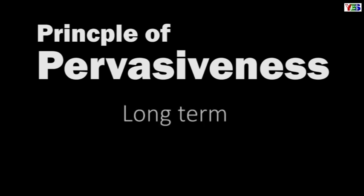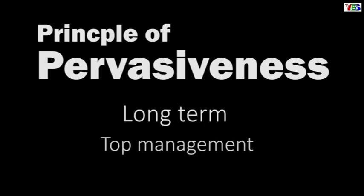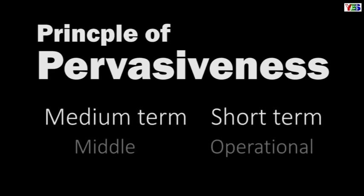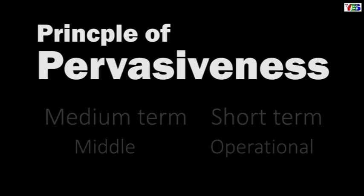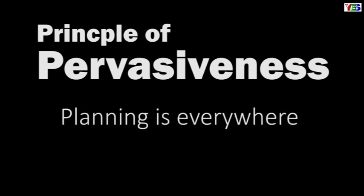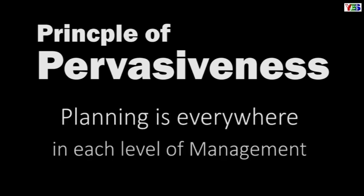The next principle is the principle of pervasiveness. Long-term plans are related with top management, while medium-term or short-term plans are related with middle or operational management, where actual work is performed. In this way, we can see that planning is present at every level of management, and that is what this principle states.